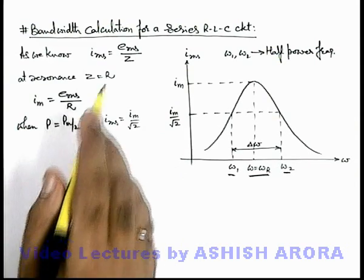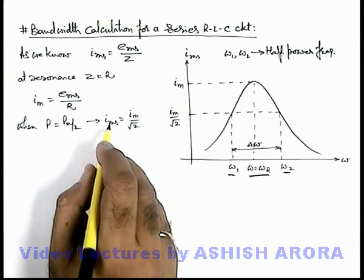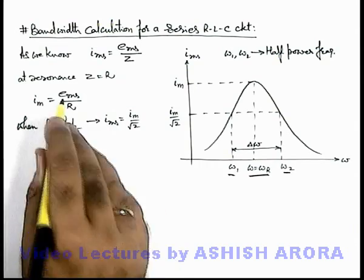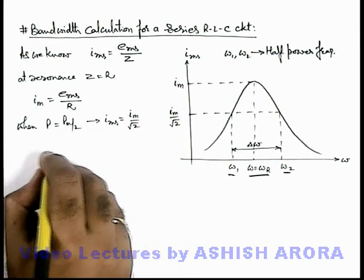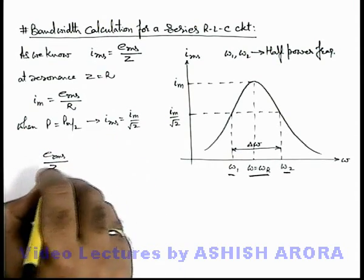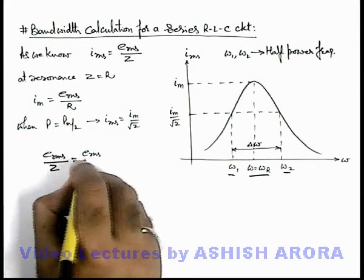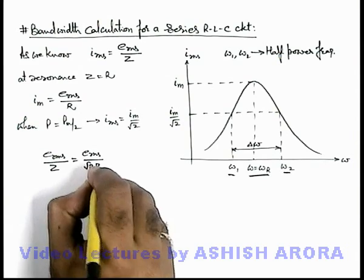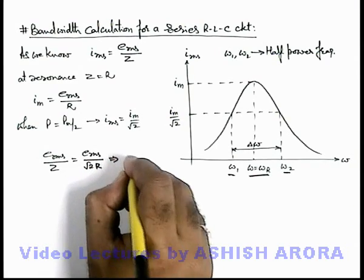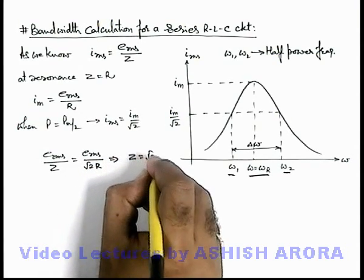So if we calculate the value of Z in the situation when I RMS is maximum by root 2, then we can substitute here I RMS is E RMS by Z. This is equal to I maximum is E RMS by R, so it will be root 2 R. This implies we can see the value of Z we are getting is root 2 R.